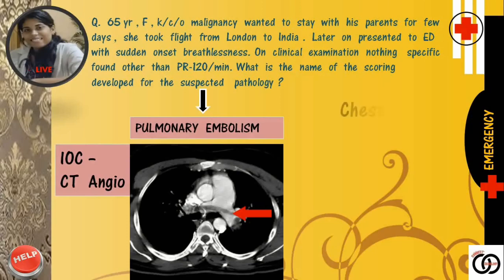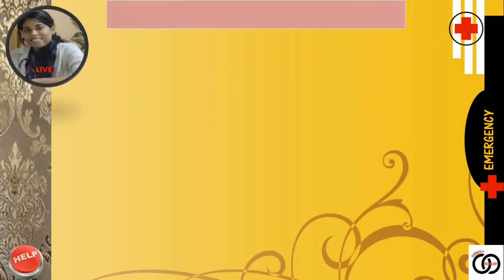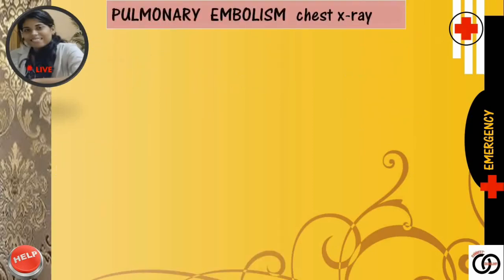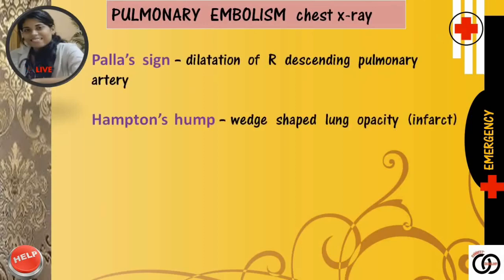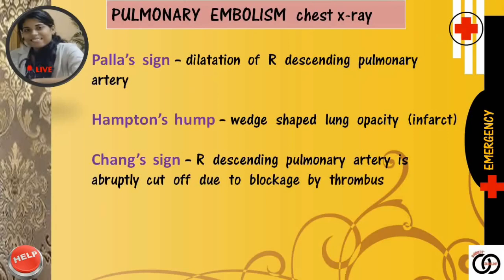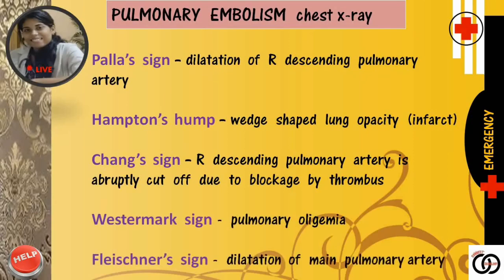Please note, the chest X-ray in the majority of cases is seen as normal. However, few signs can be demonstrated in few patients. First is the Palla's sign — it's dilated right descending pulmonary artery. Hampton's hump — it's the wedge-shaped lung opacity because of infarction. Chang's sign — it's abrupt cut-off of the right descending pulmonary artery because of blockade by the thrombus. Westermark sign — that is pulmonary oligemia. And the Fleischner sign — it's dilated main pulmonary artery.